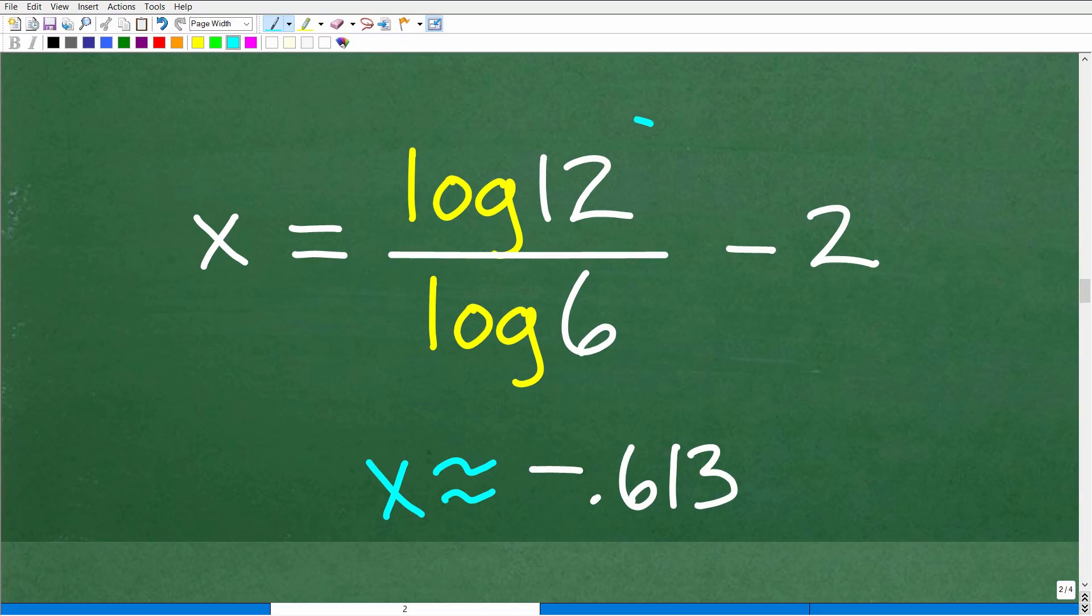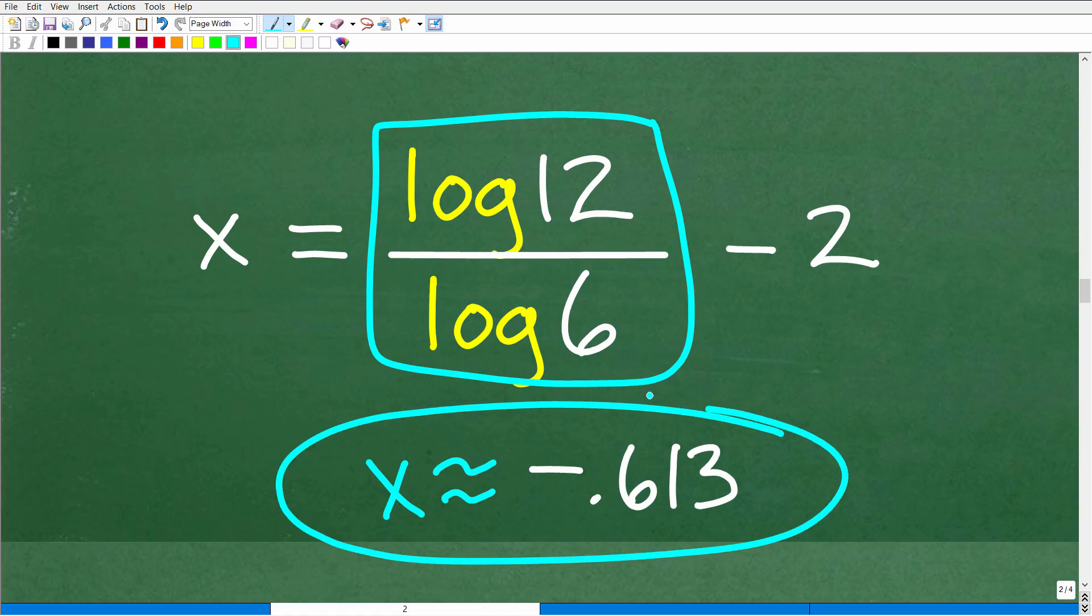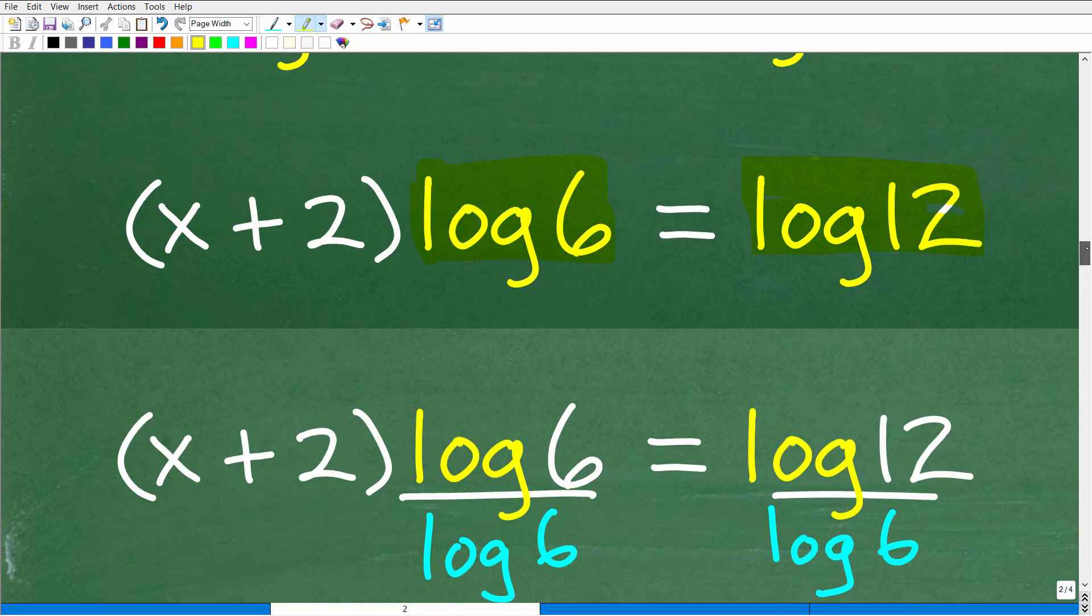Okay, so now in your calculator, you can go ahead and actually plug this in, log 12 divided by log 6, get that value and subtract 2, and if you did this correctly, you'll get x is approximately equal to negative 0.613, there's some other decimals there, so we're just going to round off. But this is the solution.